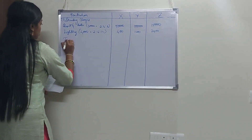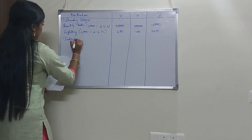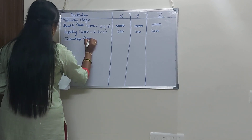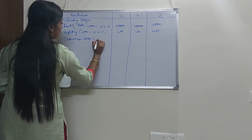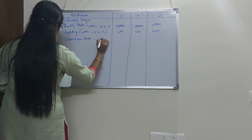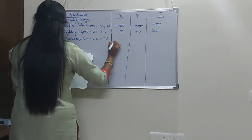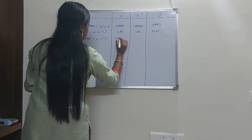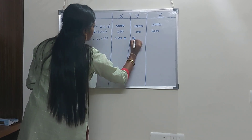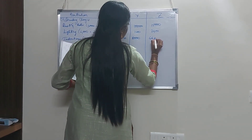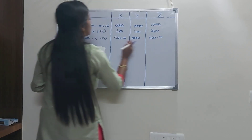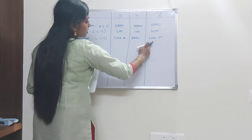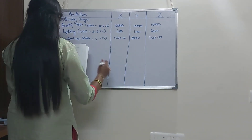Next, indirect wages. We are going to apportion indirect wages of 20,000 rupees on the basis of direct wages, and the ratio would be 4:6:5. Individual machines would have 5,333.33, 8,000 and 6,666.67. You can round it off — so 5,333 and 6,667 — you can have it that way as well.